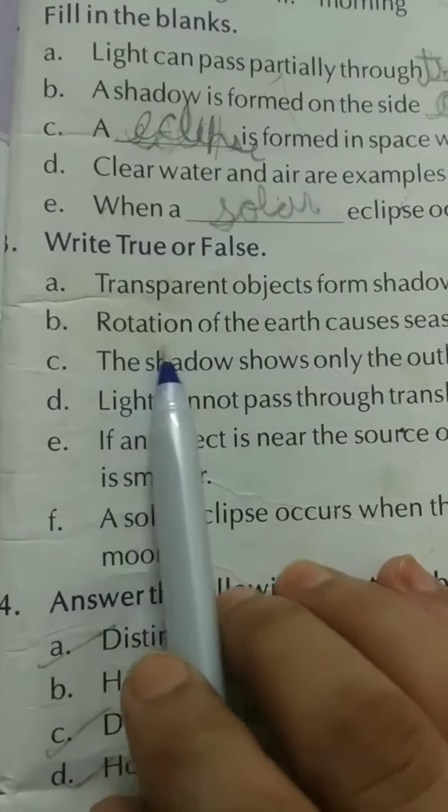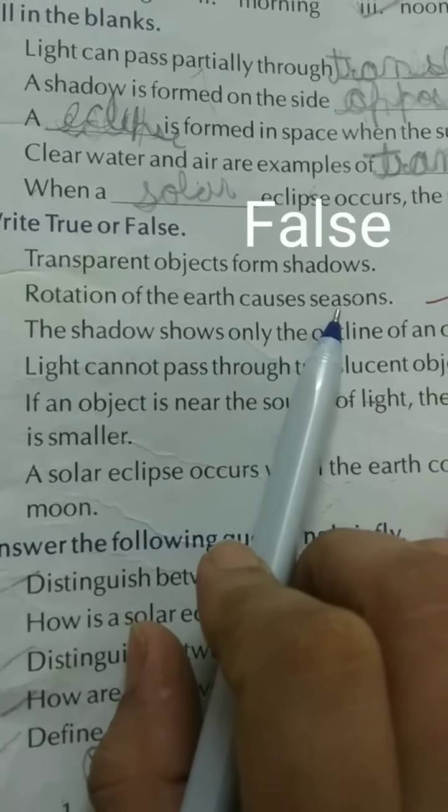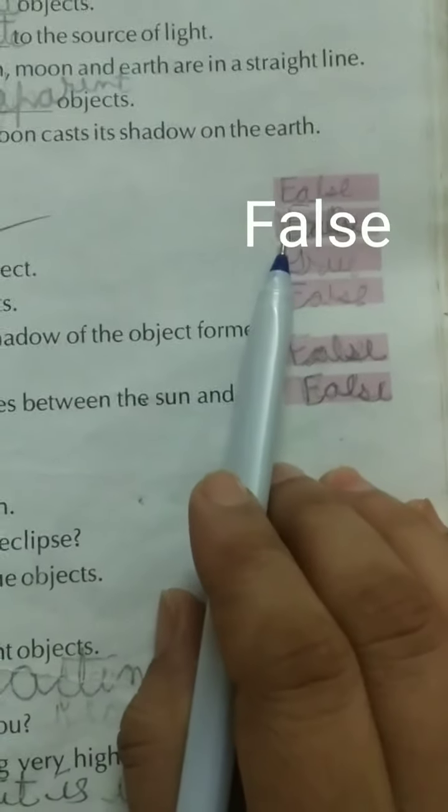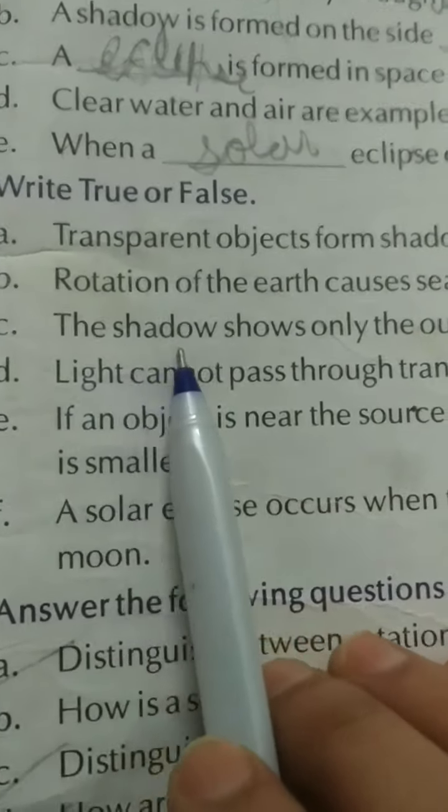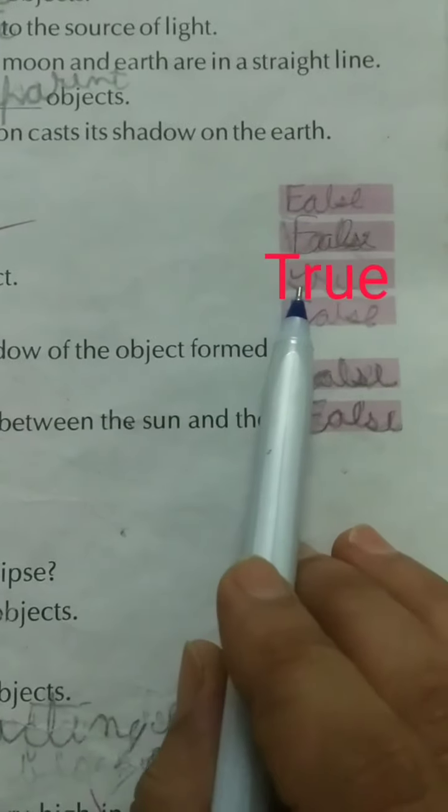Part B: Rotation of the earth causes season. It is false. Part C: The shadow shows only the outline of an object. True.